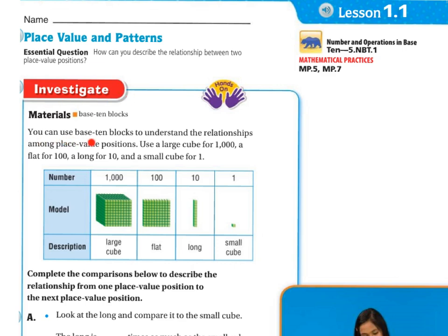You can use base-10 blocks to understand the relationships among place value positions. Use large cubes for thousands, flats for 100, longs for 10, and small cubes for 1. So let's look at our model: this large cube is 1,000, the flat is 100, the long is 10, and the small is 1.